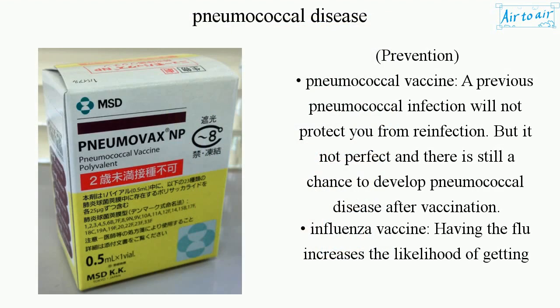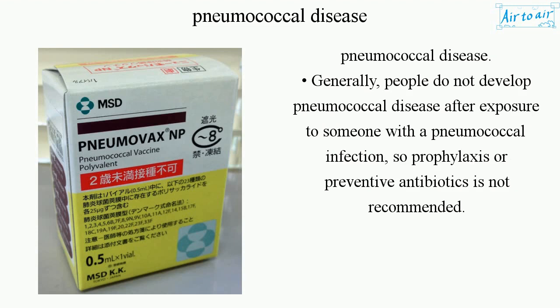Prevention: Pneumococcal vaccine — a previous pneumococcal infection will not protect you from reinfection, and the vaccine is not perfect; there is still a chance to develop pneumococcal disease after vaccination. Influenza vaccine — having the flu increases the likelihood of getting pneumococcal disease. Generally, people do not develop pneumococcal disease after exposure to someone with a pneumococcal infection, so prophylaxis or preventive antibiotics is not recommended.